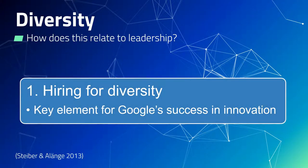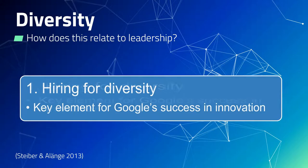A series of interviews conducted by Stieber and Alang discussed that a key element of Google's success in the area of innovation was due to actively hiring for diversity. This leads us to the first leadership behaviour: eliminating bias. As a leader, if we are to hire for diversity, we need to ensure we do not approach the hiring process applying our personal biases. If we can identify and acknowledge our biases, then we can correct for that during our decision making or put in place mechanics to ensure our decision making is independently assessed, perhaps by a peer or advocate.